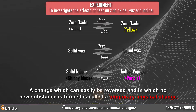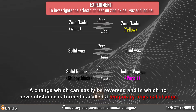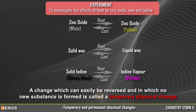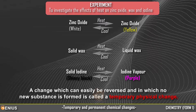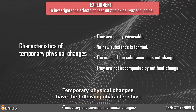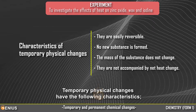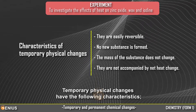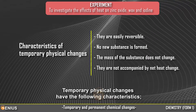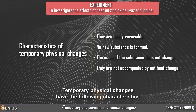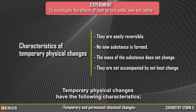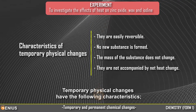A change which can easily be reversed and in which no new substance is formed is called a temporary physical change. Temporary physical changes have the following characteristics: they are easily reversible, no new substance is formed, the mass of the substance does not change, and they are not accompanied by net heat change.